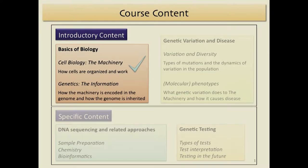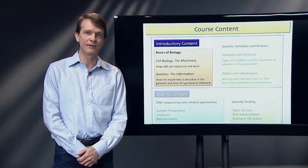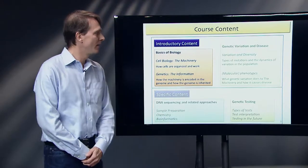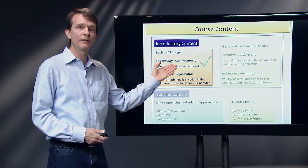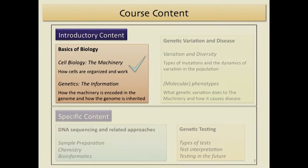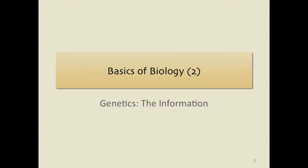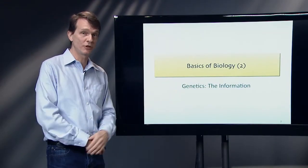Hello and welcome to the second set of lectures in the course about genetic testing. If you recall, in the first set of lectures we focused on the cell biology and the protein machinery that makes cells perform the work they do and that are necessary for life. In the second set of introductory lectures, I would like to focus on how the information machinery is encoded in the genome, how the genome is organized and how the genome is inherited. And so in this basics of biology set of lectures, we're going to be starting to talk about genetics.